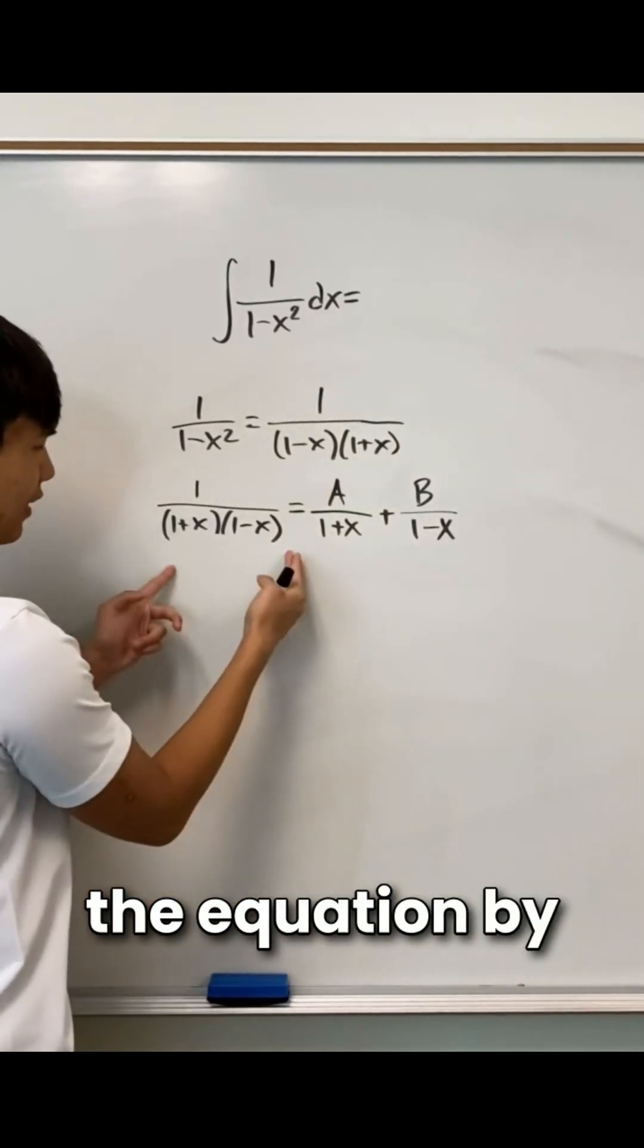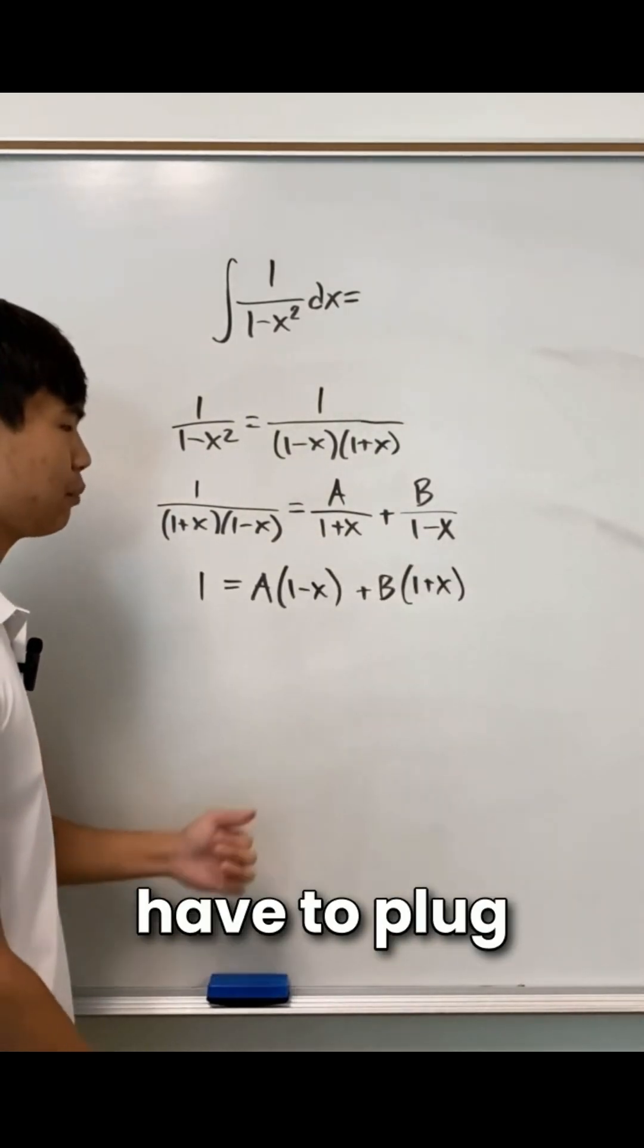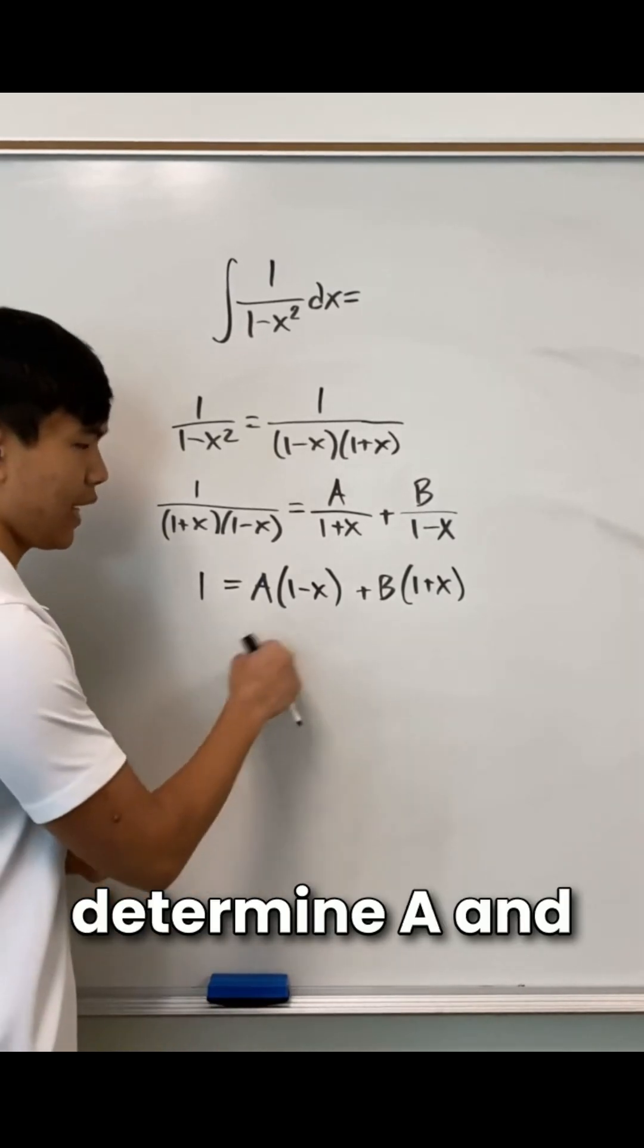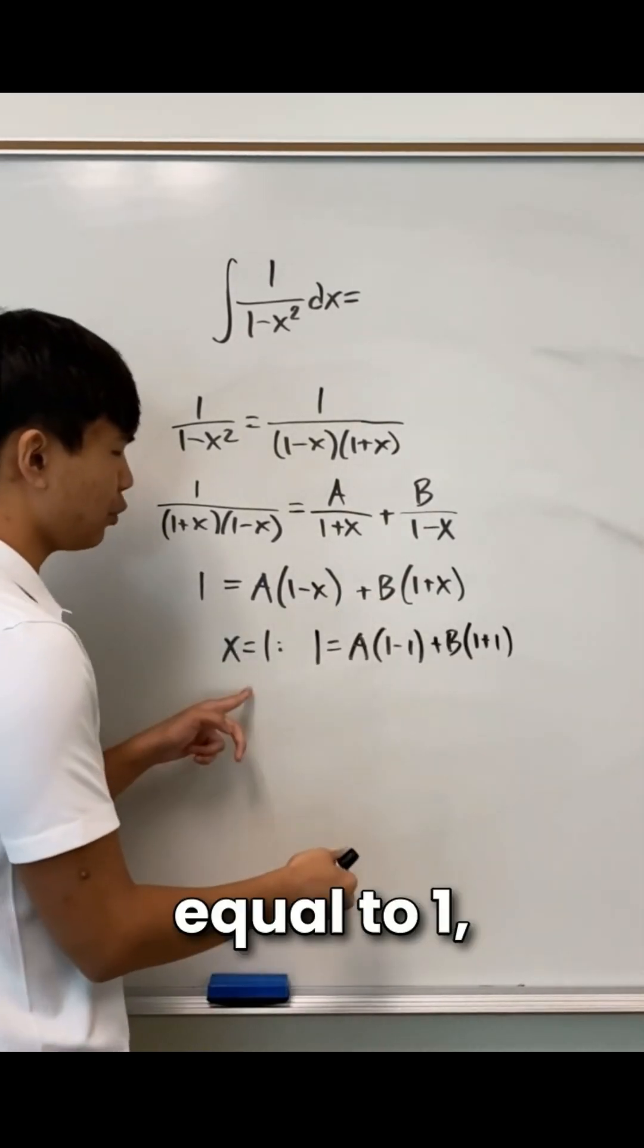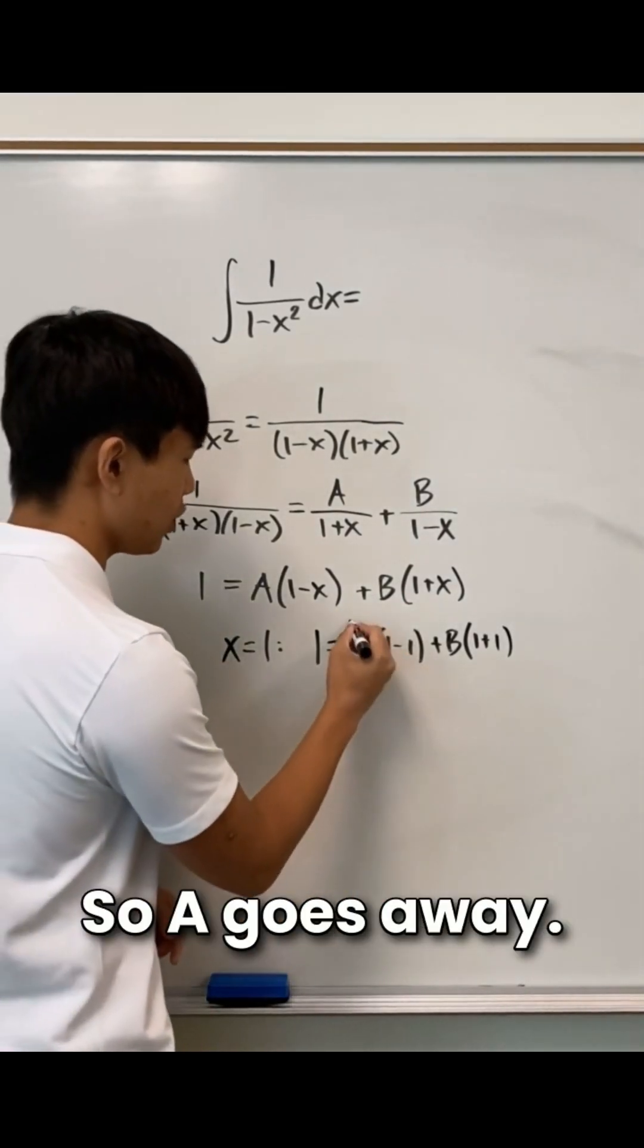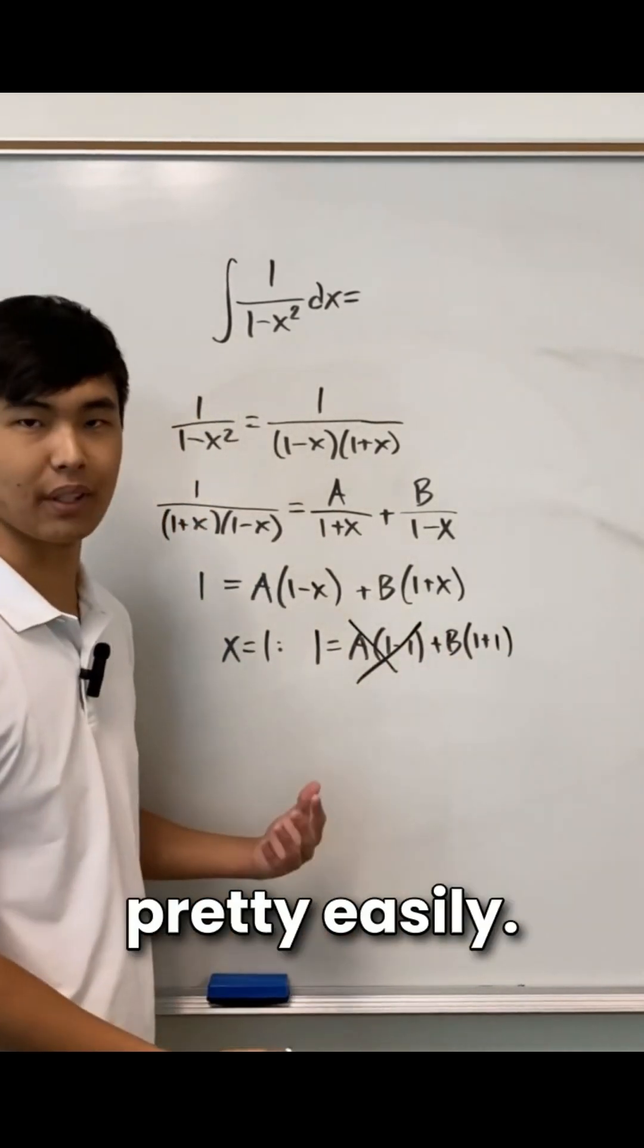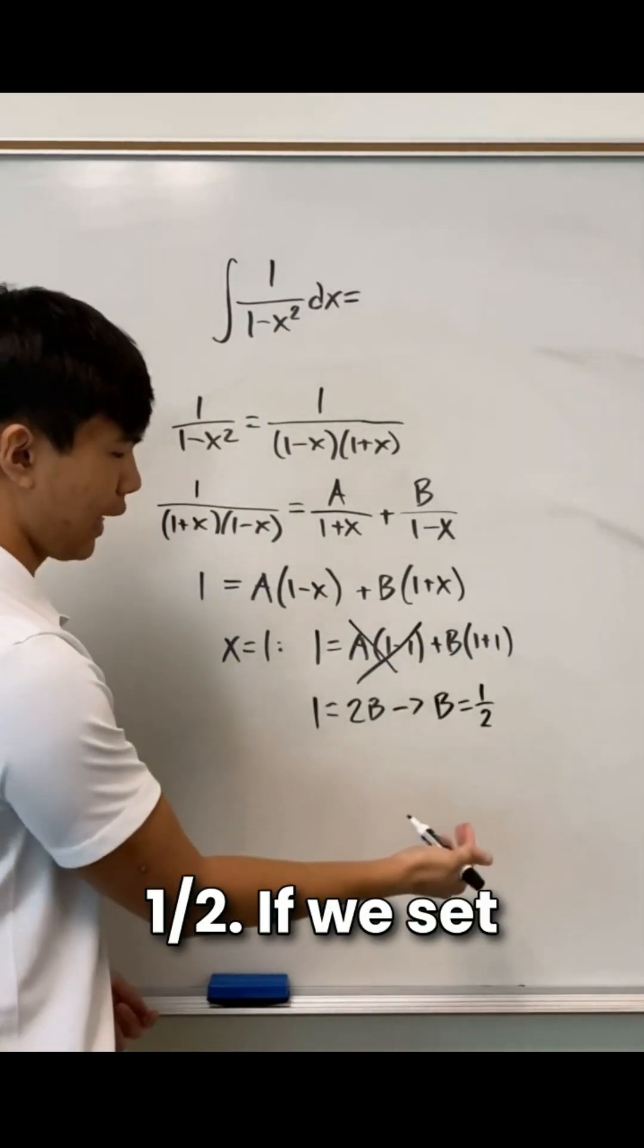When I multiply both sides of the equation by this, then we see this. And now we have to plug in appropriate values of x to determine a and b. Notice that if we set x equal to 1, this turns to 0, so a goes away and we can solve for b pretty easily. From this, we see b equals 1 half.